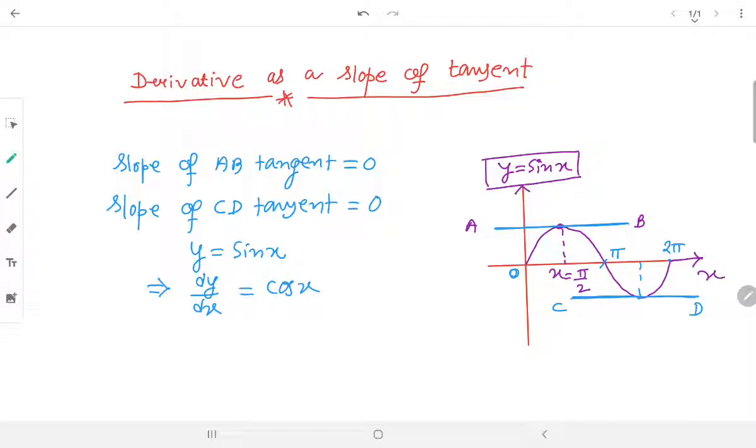Now, at x equals to 90, what is the result? We will find out. That means derivative at x equals to 90 degree. Therefore, it will be cos 90 degree. Just put the value x equals to 90 in cos x and cos 90 degree equals to 0. Therefore, look at here. Derivative at x equals to 90 is 0.